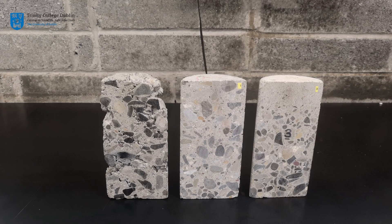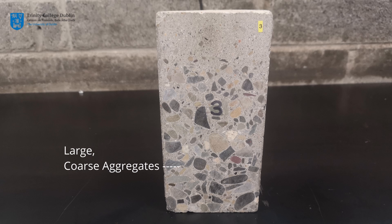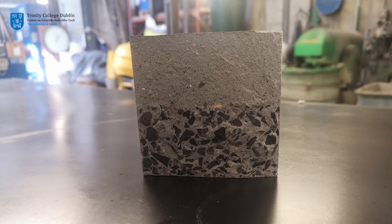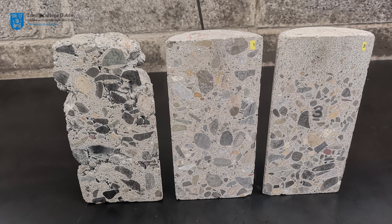If excessive vibration is imparted on the sample, the larger heavier aggregates will fall to the bottom of the mold and the lighter constituents such as fine aggregate and cement paste will rise to the top. This process, known as segregation, is undesired as it produces a non-uniform, non-homogeneous concrete, which in turn can lead to a weaker material.